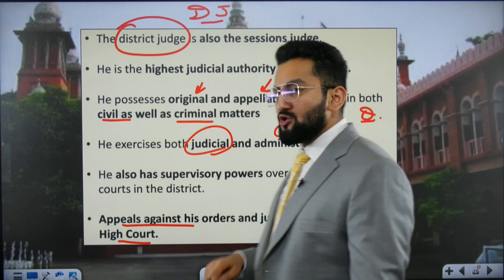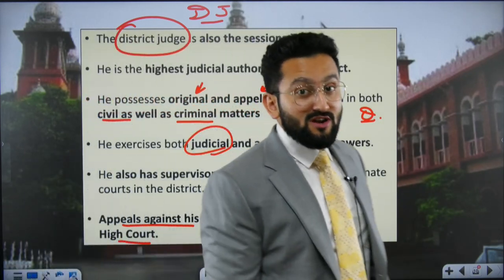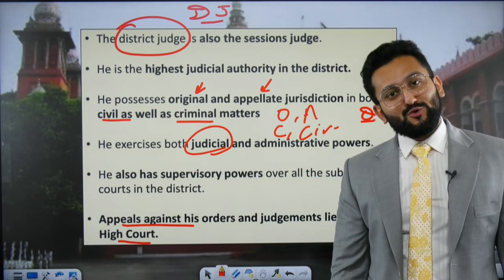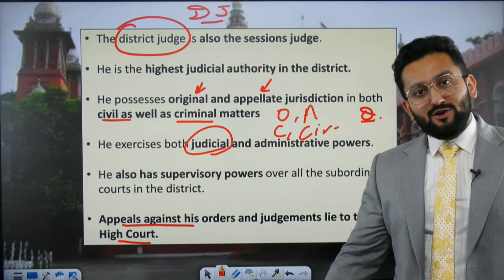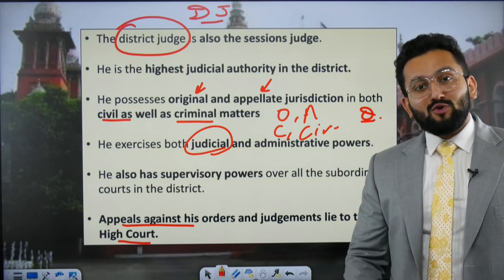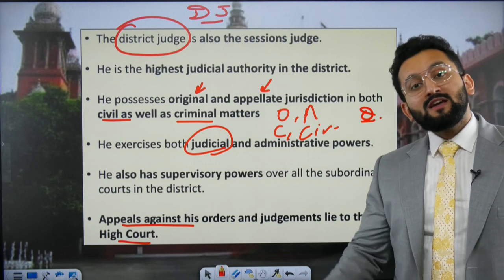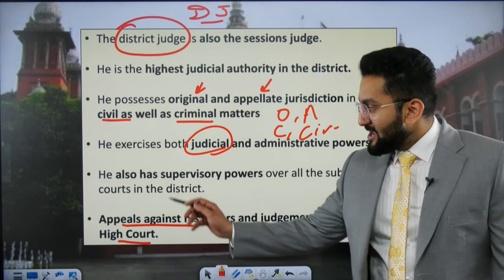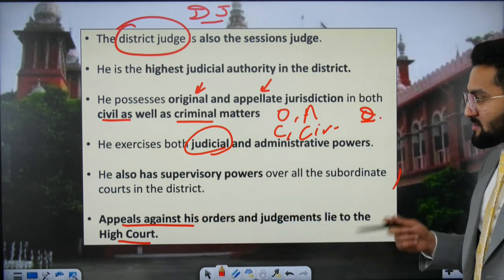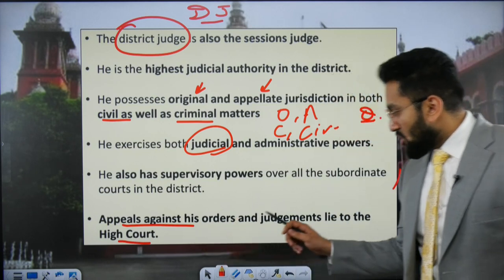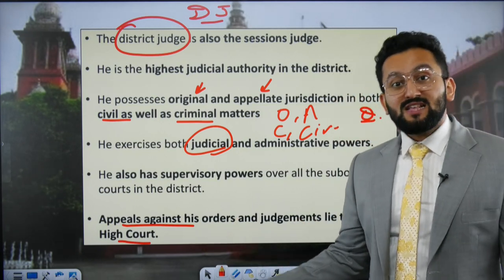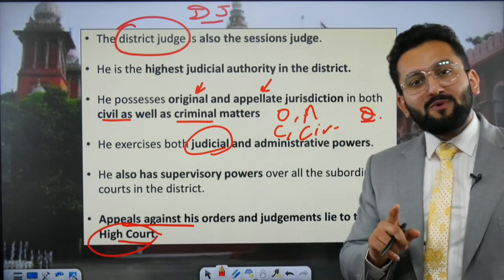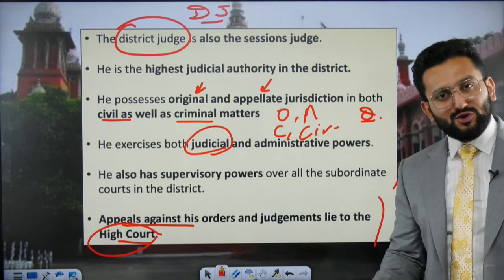The district judge exercises both judicial and administrative powers. Judicial power is when acting as a judge; administrative power includes the management of staff in the judiciary at the district level or below — how files are processed, how cases are taken up, how court fees are accumulated. He also has supervisory power over all subordinate district courts. Appeals against orders and judgments of the district judge lie at the level of the High Court, since above the district judge there is only one stop — the High Court.